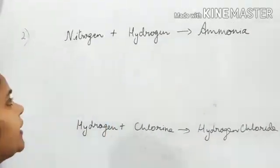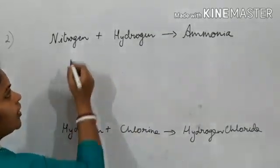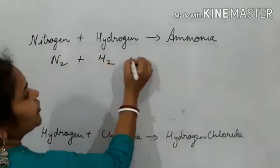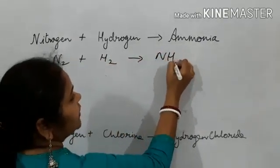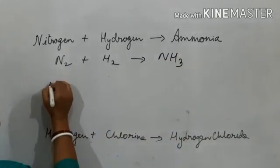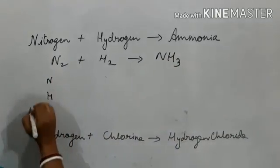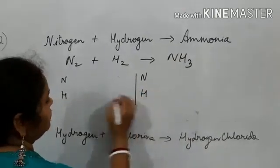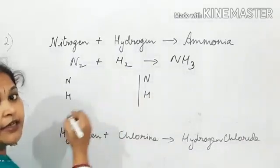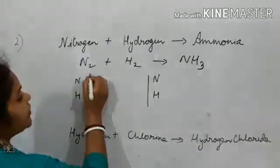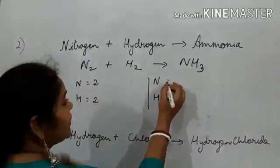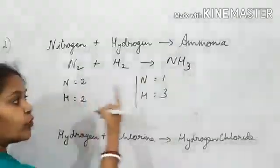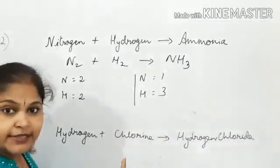The next example is the formation of ammonia. Nitrogen plus hydrogen forms ammonia: N2 plus H2 gives NH3. Writing down the elements — nitrogen and hydrogen on the left, nitrogen and hydrogen on the right in the same sequence. Tabulating: on the left, nitrogen is 2 and hydrogen is 2; on the right, nitrogen is 1 and hydrogen is 3. We see that neither element is balanced on both sides.